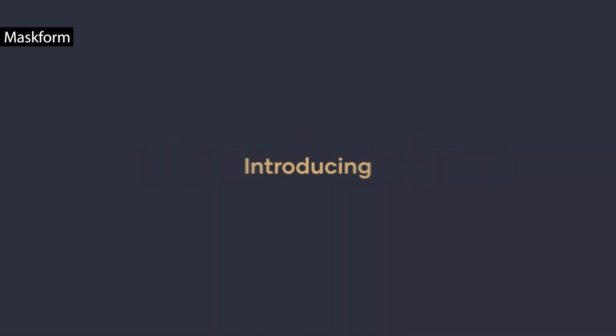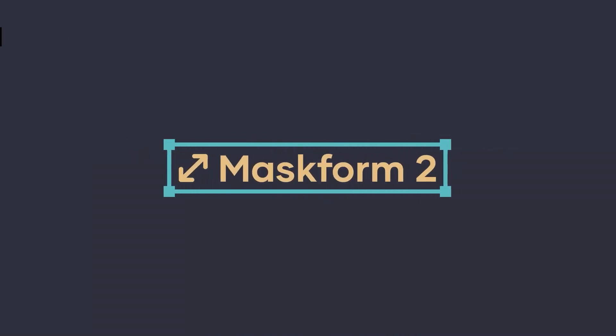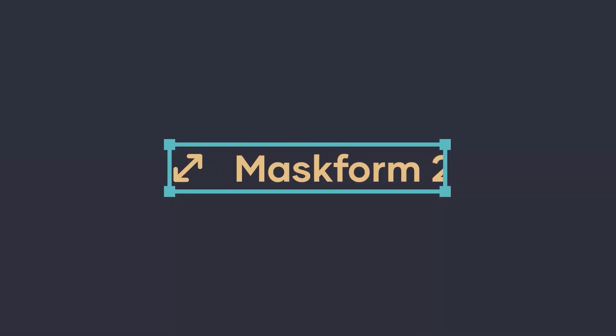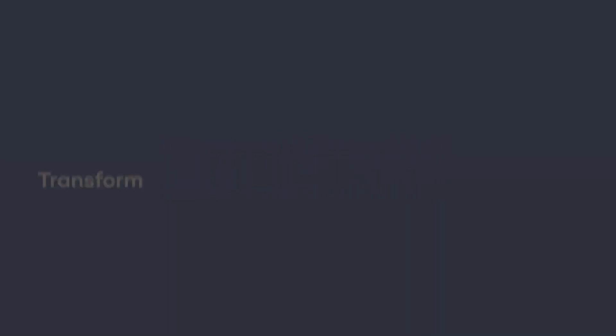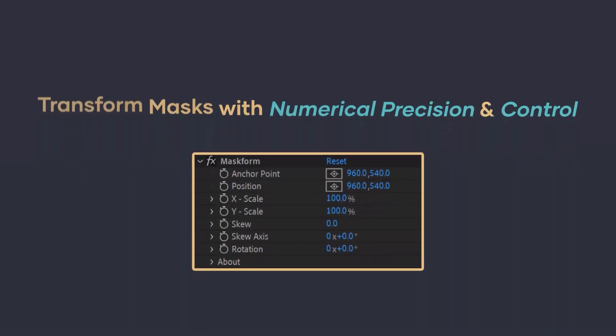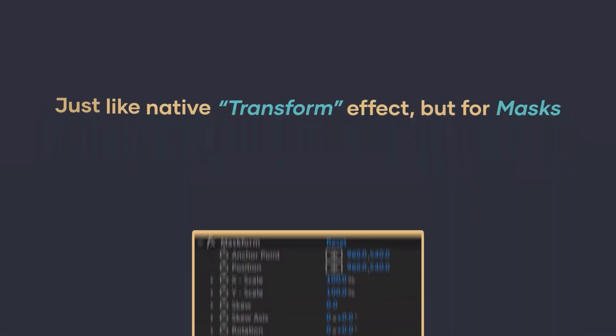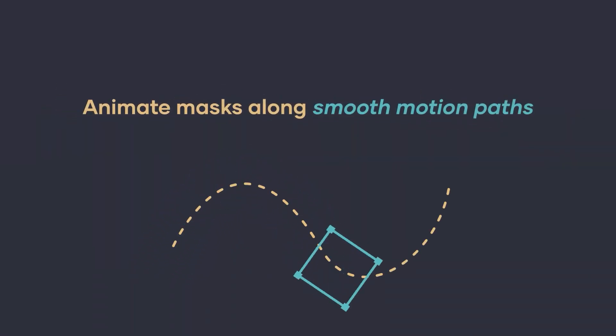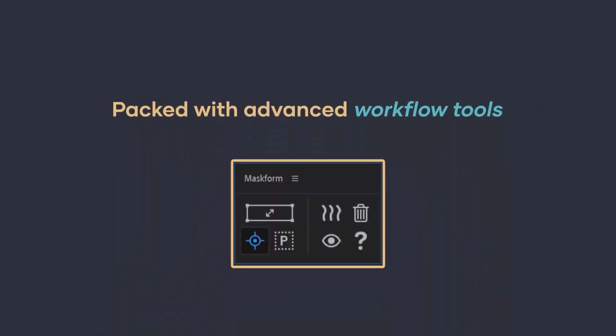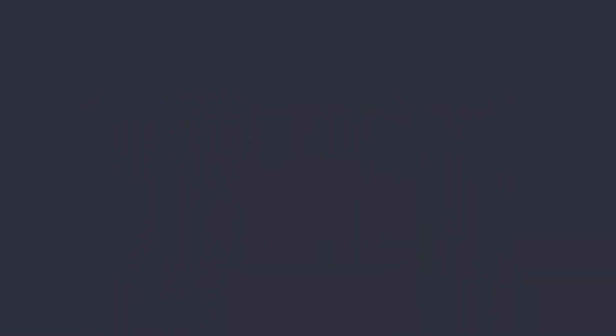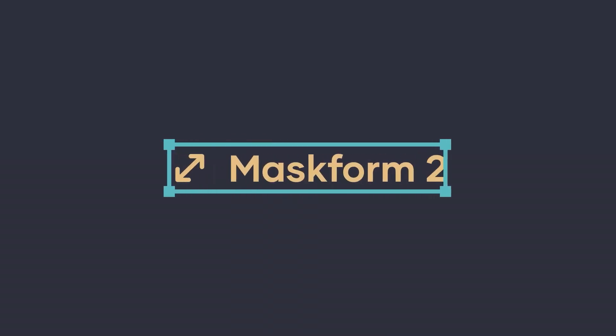Mask Form 2 is a precision mask transformation tool that gives you full numerical control over mask shapes. It lets you apply accurate transformations like scale, rotation, skew, and skew axis directly to masks, with options to toggle editing, bake transformations, or remove them entirely. With a redesigned interface and non-destructive workflow, Mask Form 2 makes complex mask adjustments clean, controlled, and easy to manage.